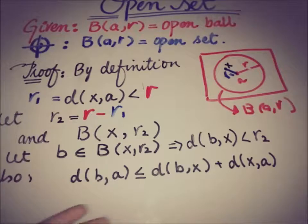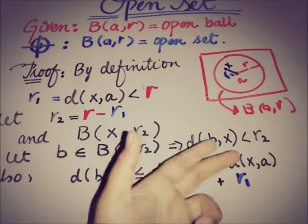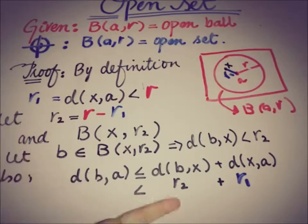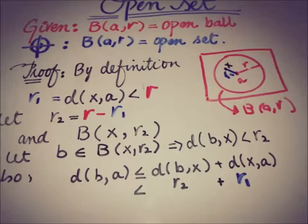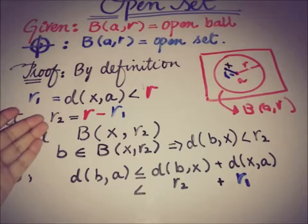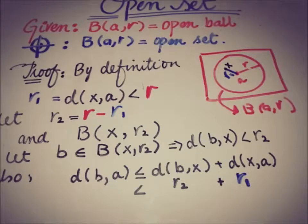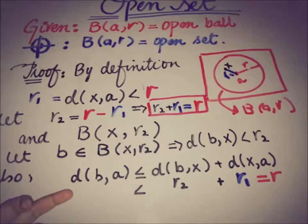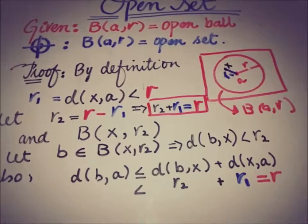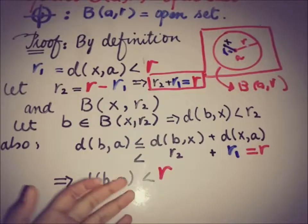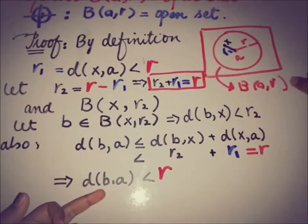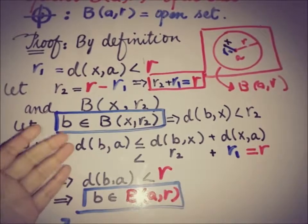Substituting: d(b, x) < r2 and d(x, a) = r1, so d(b, a) < r2 + r1. Since r2 = r − r1, we have r2 + r1 = r. Therefore d(b, a) < r, which implies that b is a member of the open ball B(a, r).